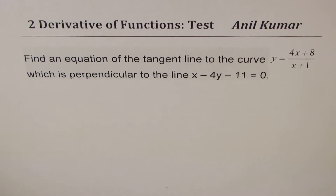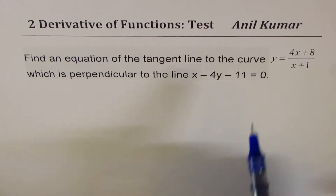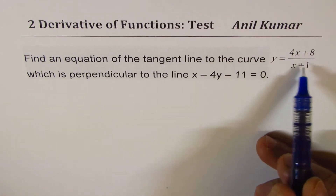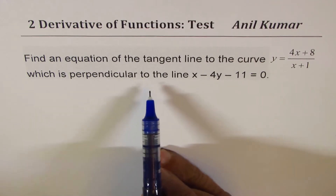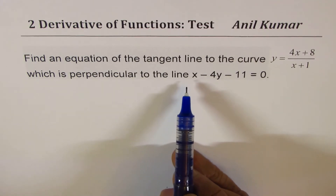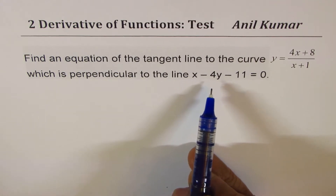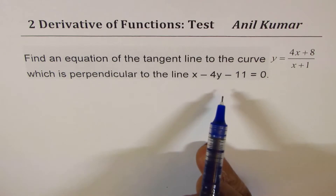I'm Anil Kumar, sharing with you previous test paper questions based on derivatives of functions. The question here is: find an equation of the tangent line to the curve y equals 4x plus 8 divided by x plus 1, which is perpendicular to the line x minus 4y minus 11 equals to 0.